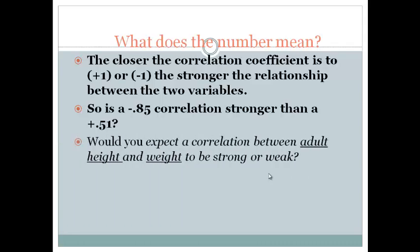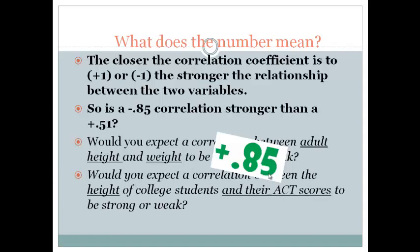So here's a couple practice questions. Would you expect the correlation between adult height and adult weight to be strong or weak? Is there a relationship between height and weight? We might guess this is a 0.85, strong relationship, and we'll talk about the positive. What would you expect the correlation to be between height of college students and their ACT scores? Do you think that's strong or weak? We might find a weak one there, which doesn't really tell us a lot.